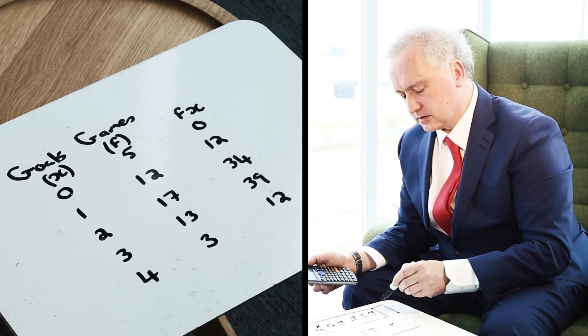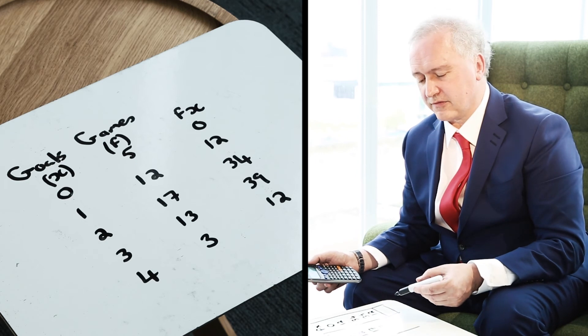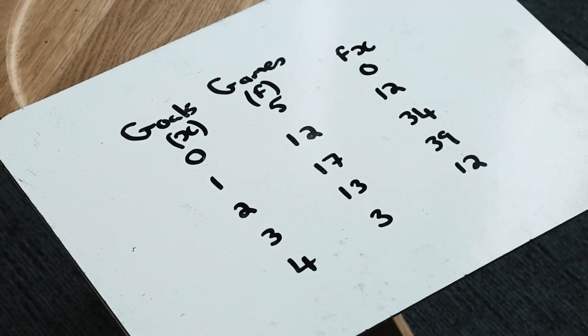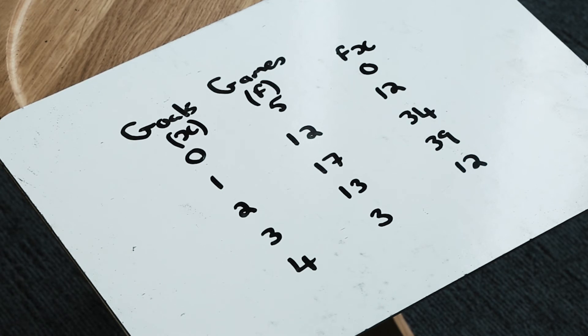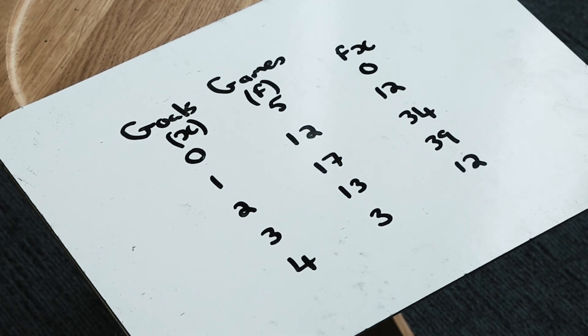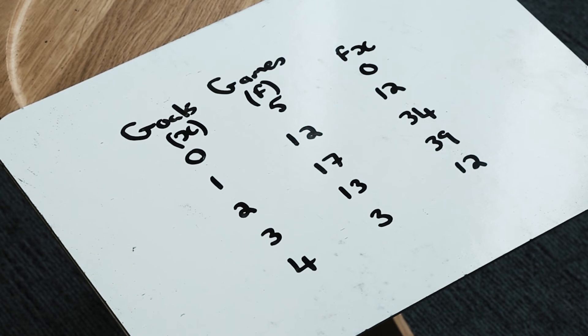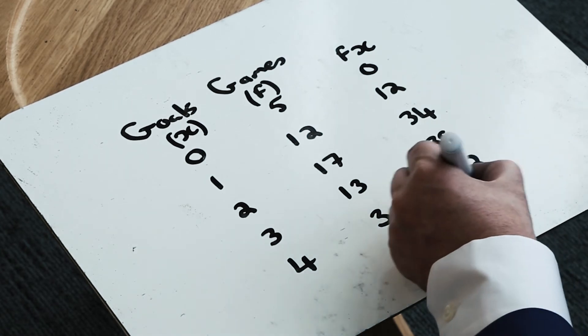All I now need to do is add up the total of my fx column and divide it by the number of games. So I'm going to add up my numbers: 12 and 34, then add 39, then add 12, and that produces 97.